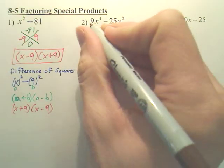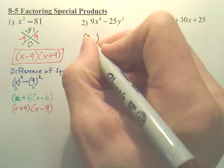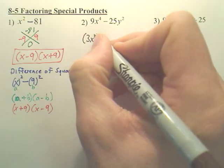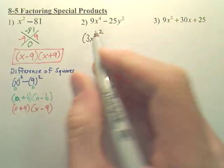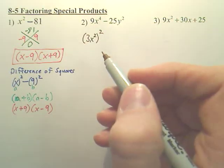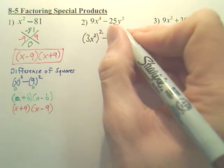And what you notice is, for the first one, you notice, to get 9, that would be 3 squared. And to get x to the fourth, that's x squared, squared. So, 3x squared times 3x squared is 9x to the fourth.